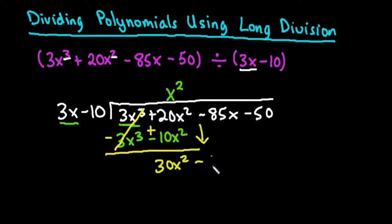And then I bring down the next term, the negative 85x. And then I repeat. I figure out, what would I multiply 3x by to get 30x squared? So 30 divided by 3 would be 10. So I know that I'm going to need a positive 10. I have an x squared, and right now I have an x. So I would need one more x, which is why we have to have the like terms. That's why you have to add places if you're missing terms so that you'll have like terms when you distribute.